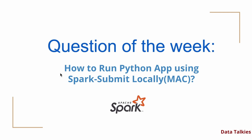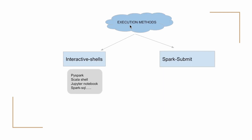As you might know, there are two ways to execute your Spark code. The first is interactive shells like PySpark and SparkShell — this is mostly used for testing or development purposes. The second way is Spark Submit, where you package your application and submit it to Spark for execution.